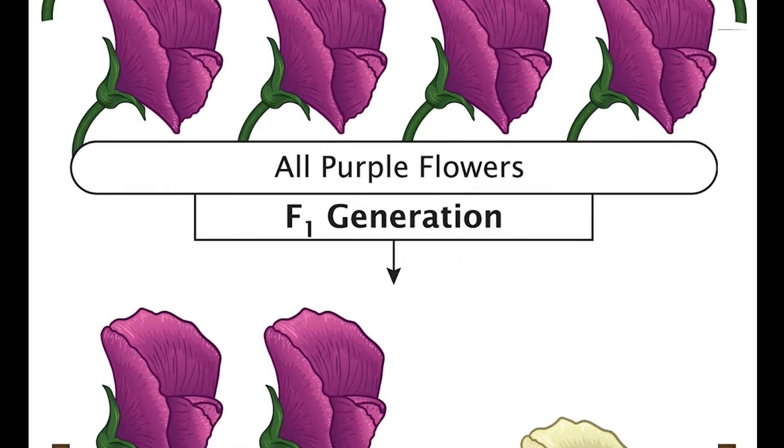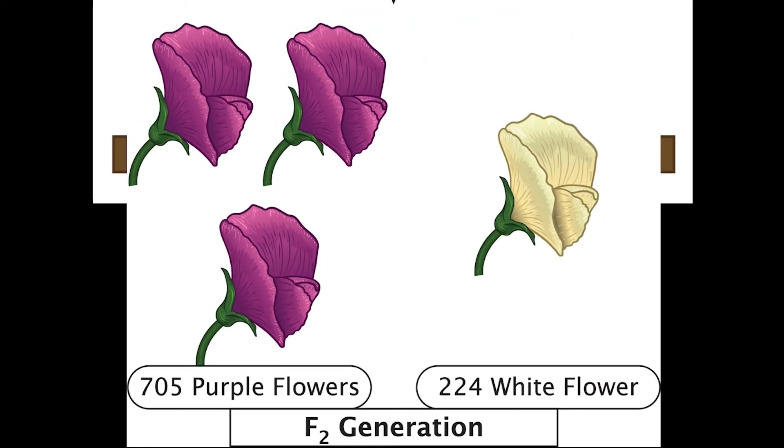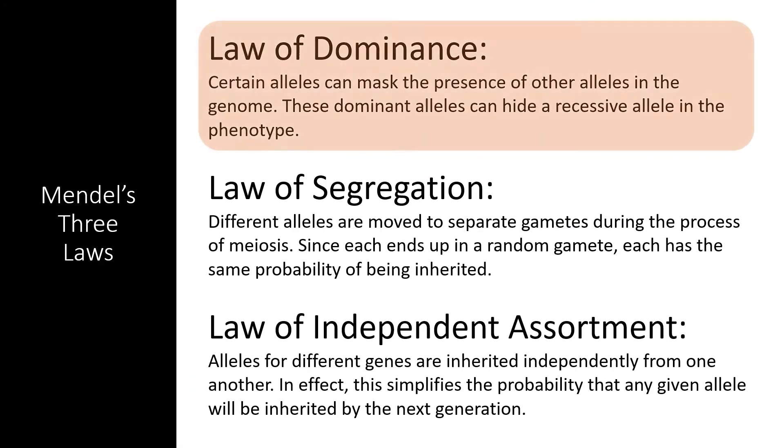However, Mendel found that if he crossed two of these F1 plants into a new generation, the F2 generation, at least one fourth of the plants would have white flowers. This is how Mendel developed his first law, the Law of Dominance. This law states that some alleles, like the allele that creates purple flowers, can cover up other alleles, like the allele that creates white flowers, in a heterozygous organism that has one of each.